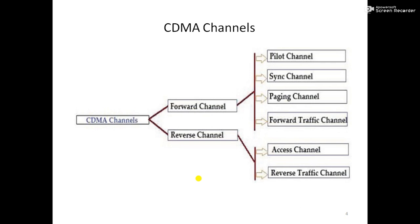CDMA channels can be broadly categorized as forward channels and reverse channels. The forward channel is the direction of communication from cell to mobile — the downlink path. It includes the following channels: pilot channel, sync channel, paging channel, and forward traffic channel.